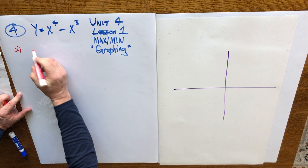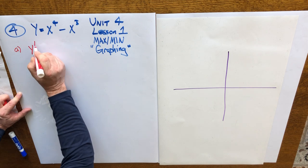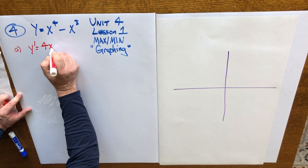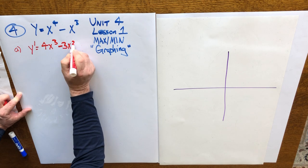Step letter A, you want to take the derivative of that function, so y prime equals 4x cubed minus 3x squared.